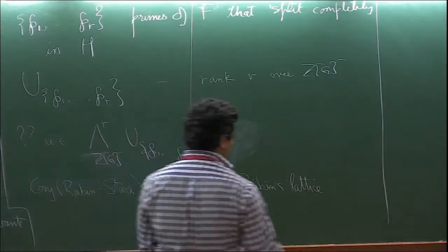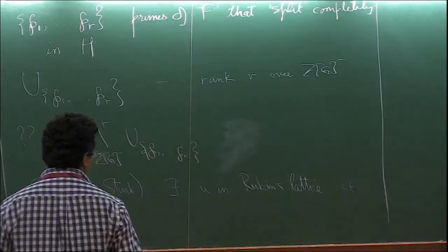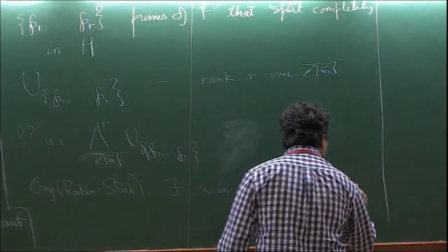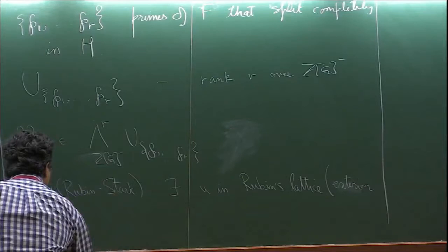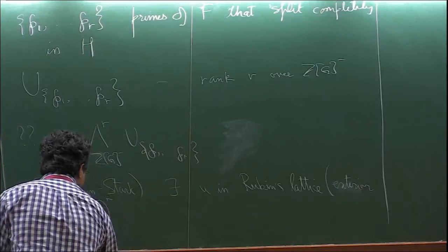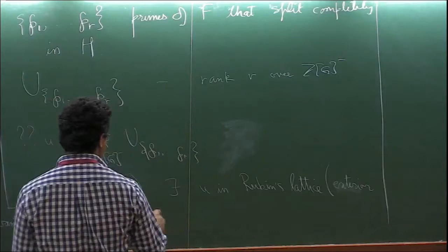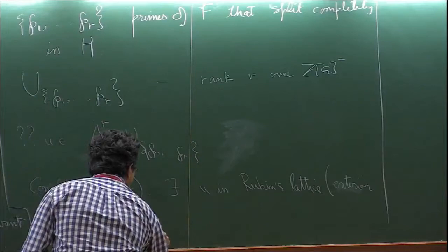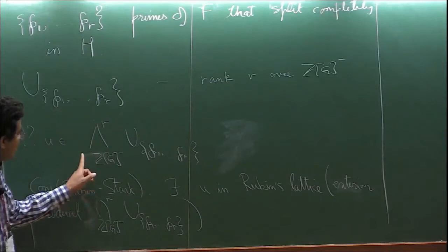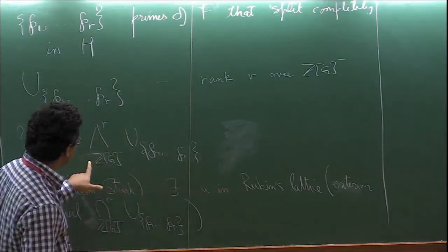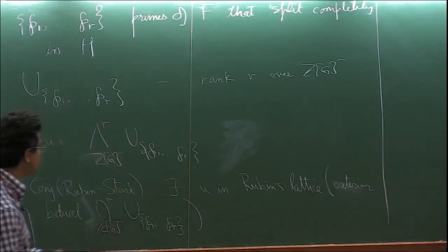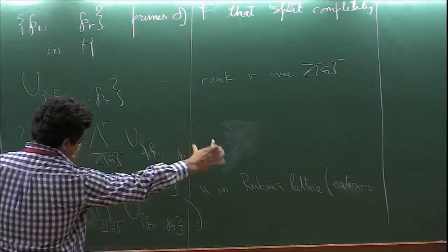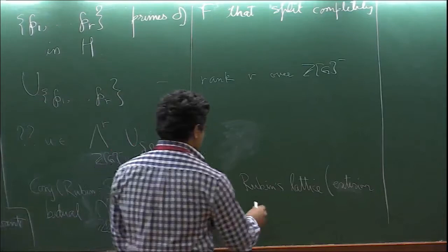The correct conjecture is made by Rubin using what's called Rubin's lattice. There exists u in Rubin's lattice — also called the exterior bidual, a slightly more general notion due to Takemichi Sano and David Burns — such that this seems to be the right place for Euler systems to live. There's a map from the exterior power to the r-th exterior power of Q tensored with this over Q[G]^minus. It's not injective in general, and this object lives somewhere in between with carefully chosen denominators.